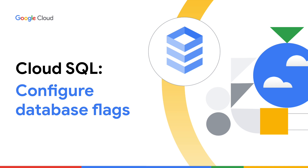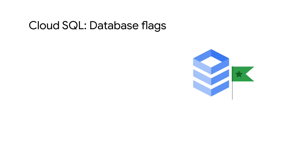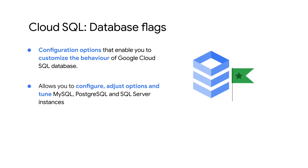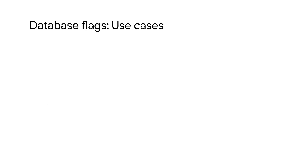In this video you will learn about database flags, their use cases, and how to configure them for Google Cloud SQL. Database flags are configuration options that enable you to customize the behavior of your Google Cloud SQL database. They are used for many operations including adjusting MySQL parameters, configuring and tuning MySQL, PostgreSQL, and SQL Server instances.